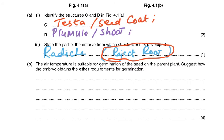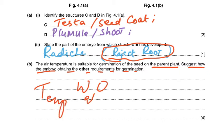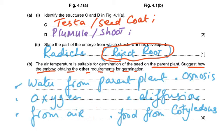The air temperature is suitable for germination on the parent plant. Suggest how the embryo obtains the other requirements. Remember T, W, O: temperature, water, and oxygen — not air and not moisture. The embryo receives water from the parent plant by osmosis, oxygen from the air by diffusion, and food — starch, proteins, and fats — from the cotyledons.